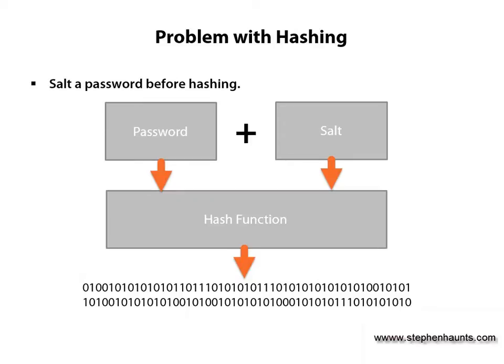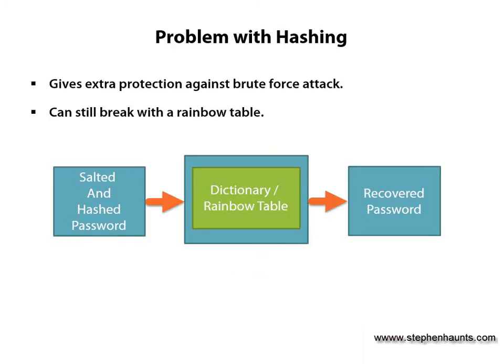One way to make a password hash harder to break is by salting the password. This is where you add a large sequence of randomly generated characters to the password, and then hash the password as before. This does give extra protection, but you shouldn't really rely on it. A salted and hashed password is still recoverable by a rainbow table attack. The size of the rainbow tables will increase to contain many more permutations of passwords, and with computers getting faster, the time it takes to go through the table will get quicker.